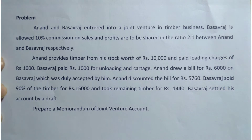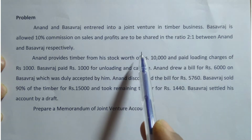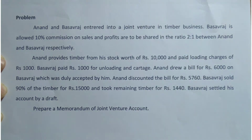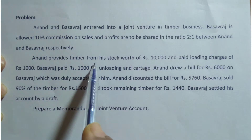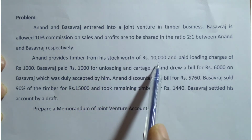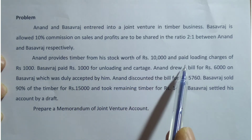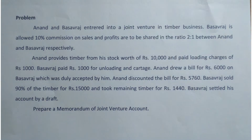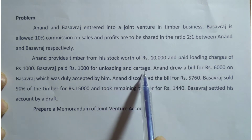Let us read the problem. Anand and Basavaraj entered into a joint venture in Timber Business. Basavaraj is allowed 10% commission on sales and profits are to be shared in the ratio of 2:1 between Anand and Basavaraj. Anand provides timber from his stock worth Rs. 10,000 and paid loading charges of Rs. 1,000. Basavaraj paid Rs. 1,000 for unloading and carriage.